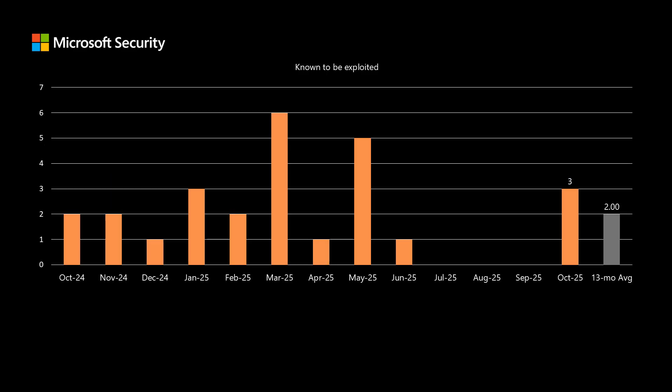One other thing that's not included in the base CVSS score is whether a vulnerability is known to be exploited or not. These are vulnerabilities where, one way or another, either Microsoft directly or through our partners, have noticed some sort of exploitation associated with a vulnerability. This month, there are three vulnerabilities that fall into that category. We've been averaging right at two over the past 13 months.